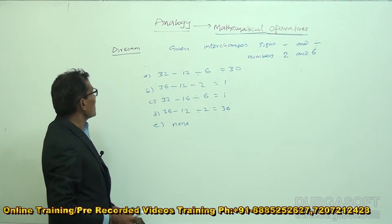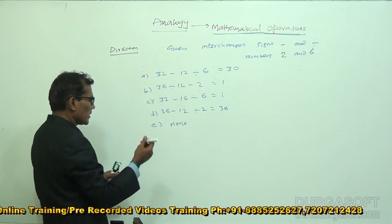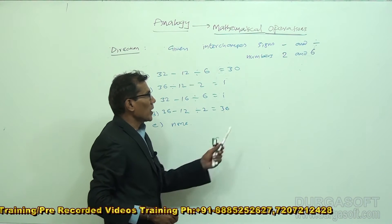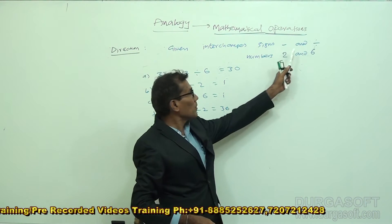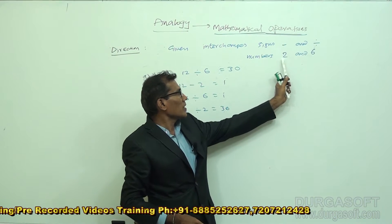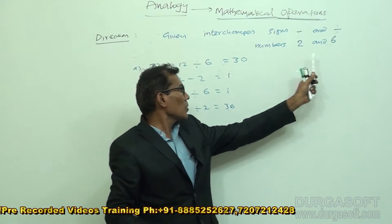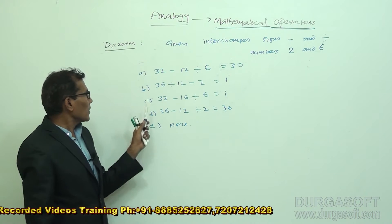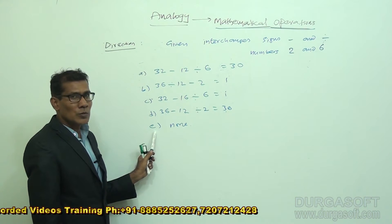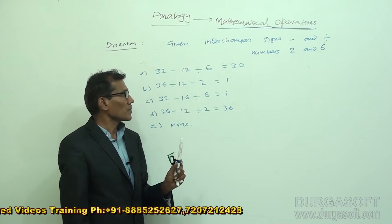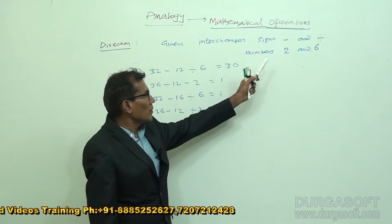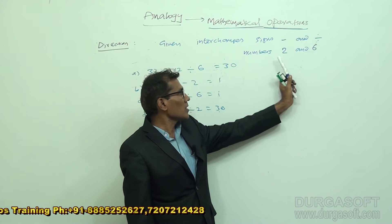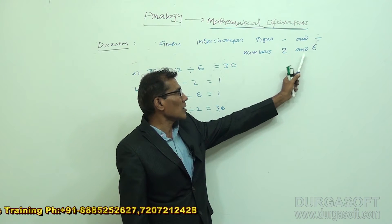Let us take the next question. The directions are given: interchange the minus sign and the divided-by sign, and interchange the numbers 2 and 6. In the equations, we need to find which equation is true according to the sign changes. We need to change minus and divided-by by interchanging them, and interchange the numbers 2 and 6.